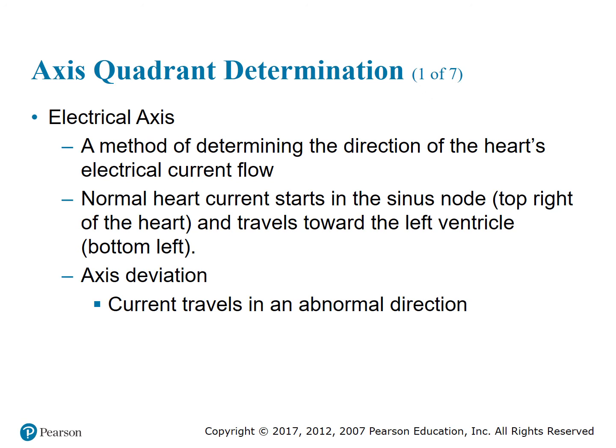When solving for bundle branch blocks and HEMI blocks, the main two leads you want to look at are V1 and V6. V1 lies on the right side, whereas V6 lies on the left side. The main thing to remember when interpreting HEMI blocks and bundle branch blocks is to utilize the algorithm found on page 287. This algorithm will save you many steps because it walks you through the process step by step.